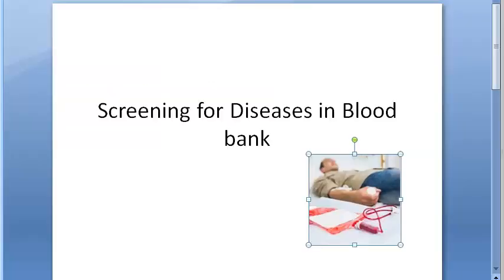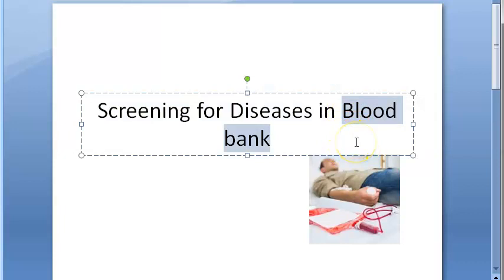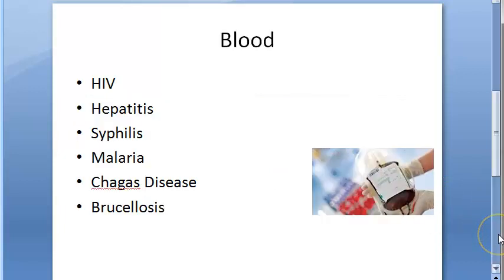In this video, let us look at the screening for diseases in blood bank. Basically, blood is collected from a donor and before it is given to the patient, it should be screened according to WHO guidelines. So the diseases that they will screen the blood for are as follows.